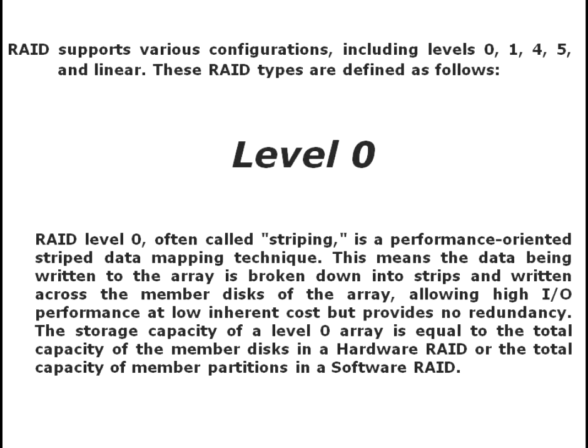RAID level 0, often called striping, is a performance-oriented striped data mapping technique. The data being written to the array is broken down into strips and written across the member disks of the array, allowing high I/O performance at low inherent cost, but provides no redundancy. The storage capacity of a level 0 array is equal to the total capacity of the member disks in a hardware RAID, or the total capacity of member partitions in a software RAID.